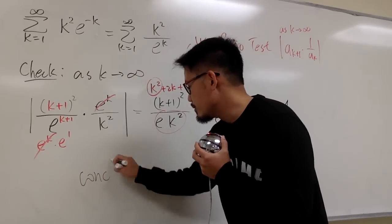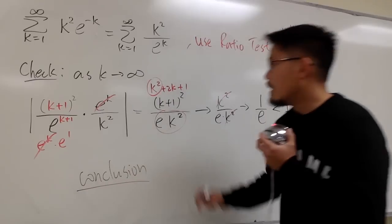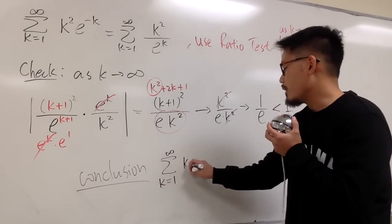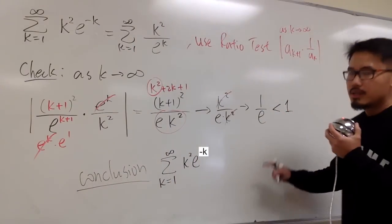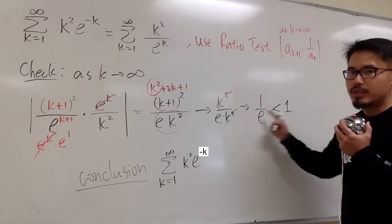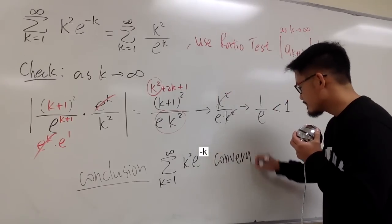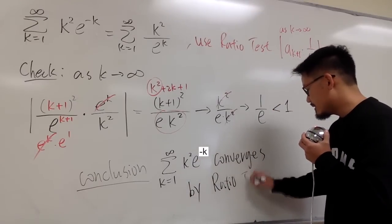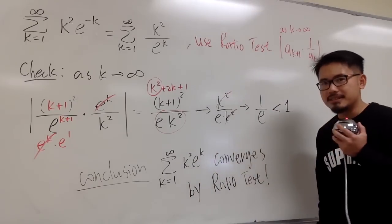The conclusion here is going to be, let's put down the original, sigma when k goes from 1 to infinity, k squared, e to negative k. When we worked out the limit from the ratio test and we get less than 1, we know this right here converges. And we can say that it converges by the ratio test. That's it.